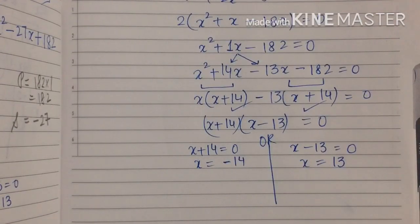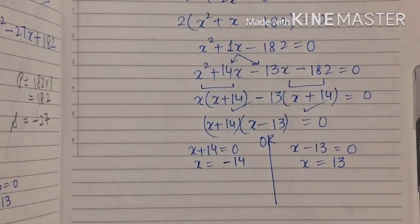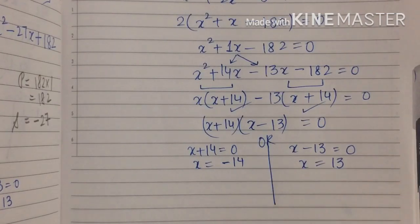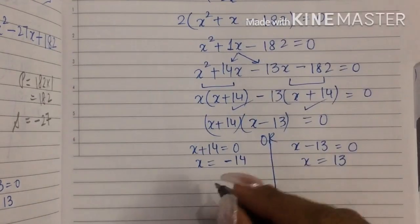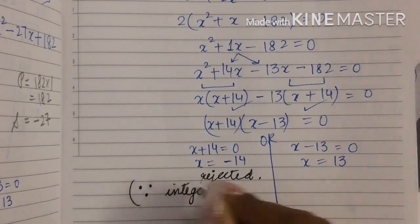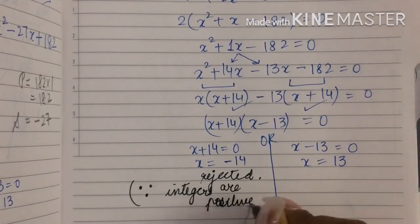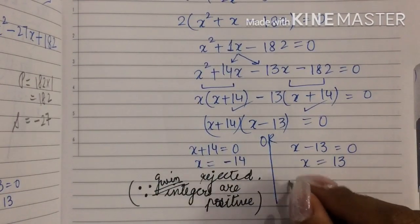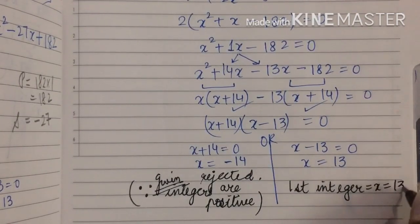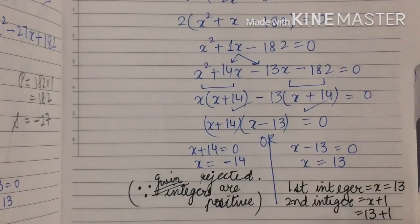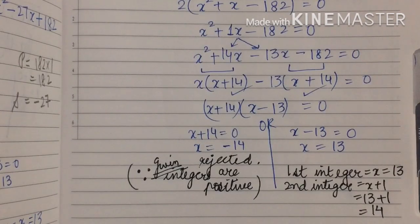Now, the word 'positive integers' in the question helps you identify the correct answer. I have obtained two values: minus 14 and 13. But the question states the integers are positive, so x equals minus 14 is rejected — reason being: integers are positive, as given. Therefore the first integer is x equals 13, and the next consecutive integer is x plus 1 equals 13 plus 1 equals 14. So this is the answer for question number 4.